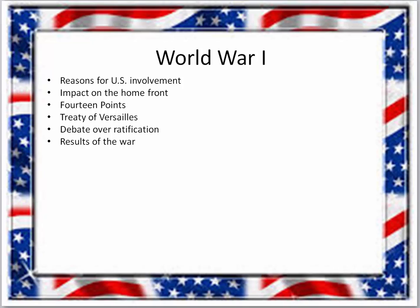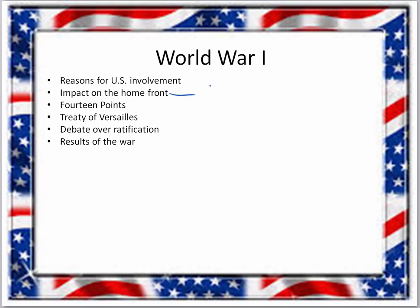US involvement had an impact on the home front. Protesting was essentially silenced with the Sedition Act. Charles Schenck handed out anti-war pamphlets and took his case to the Supreme Court — Schenck v. United States. He lost; the Court said freedom of speech can be restricted if there is a clear and present danger. Eugene V. Debs also went to jail for violating this act and ran for president from jail in 1920. Remember meatless days, rationing, and the Great Migration — African Americans moving north for jobs.